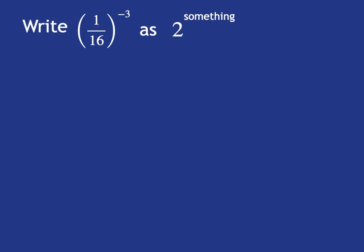So if we're asked to rewrite 1 over 16 to the power of negative 3 as 2 to the power of something, how will we go about doing it? Well, we'll start off with 1 over 16 to the power of negative 3, and we know we've got to get it into the form where we've got the number 2 as the base.